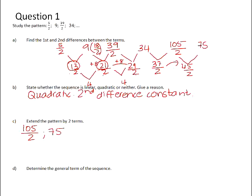Question D, determine the general term of the sequence. We've already said that the pattern is a quadratic pattern, which means that the general term is given by a n squared plus b n plus c. Therefore, twice the value of a will equal 4, because twice a is the constant second difference.